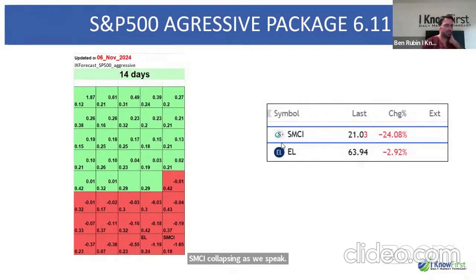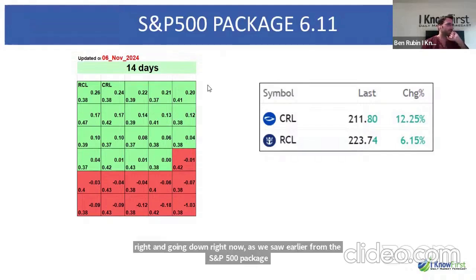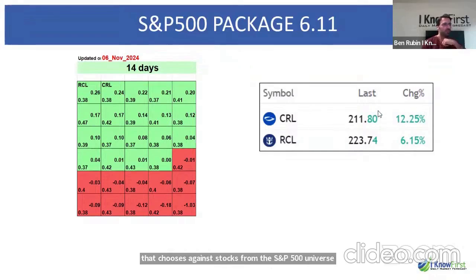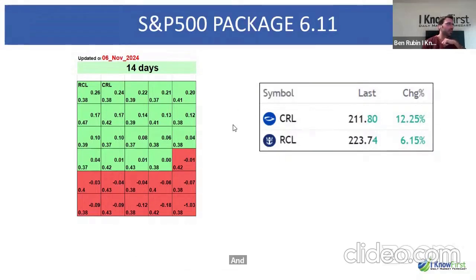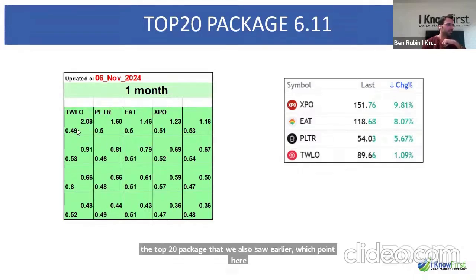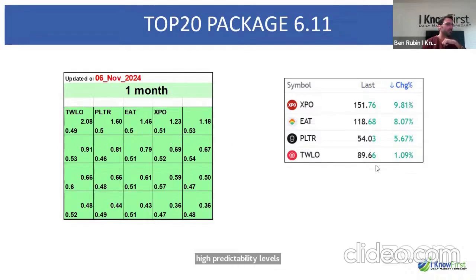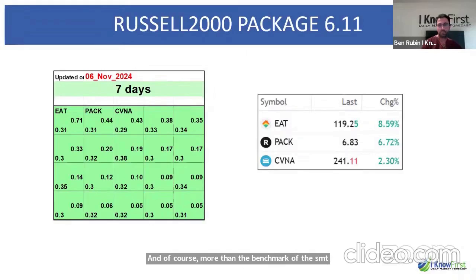SMCI and EL are both going down right now. From the S&P 500 package, we also saw RCL and CRL going up by around 6%. The top 20 package also appeared with a predictability of 0.5 — remember, that's around 75% probability the asset moves in the predicted direction. We like high predictability levels, and those four stocks are moving up, outperforming the S&P 500 benchmark.